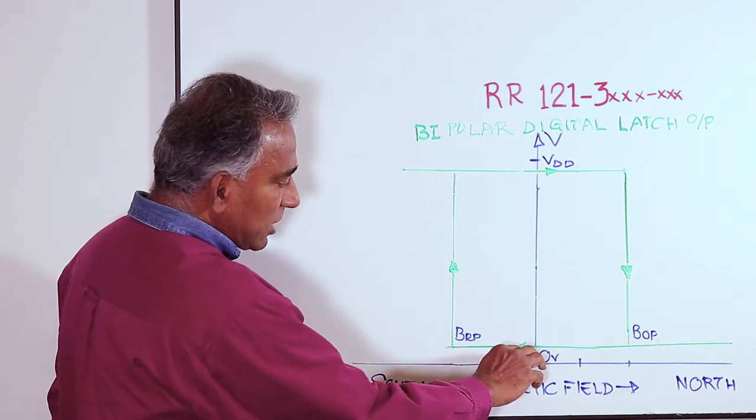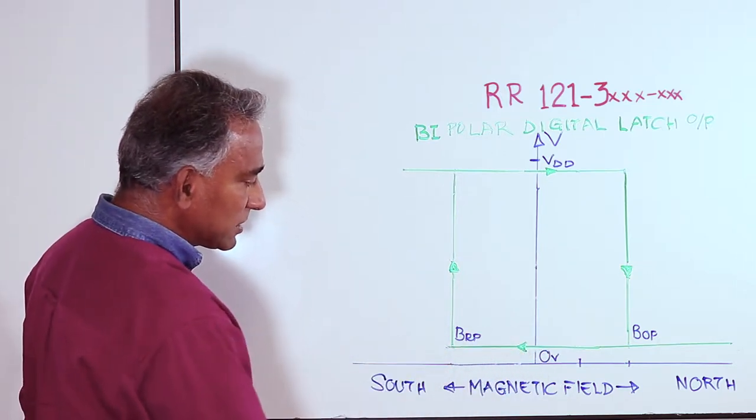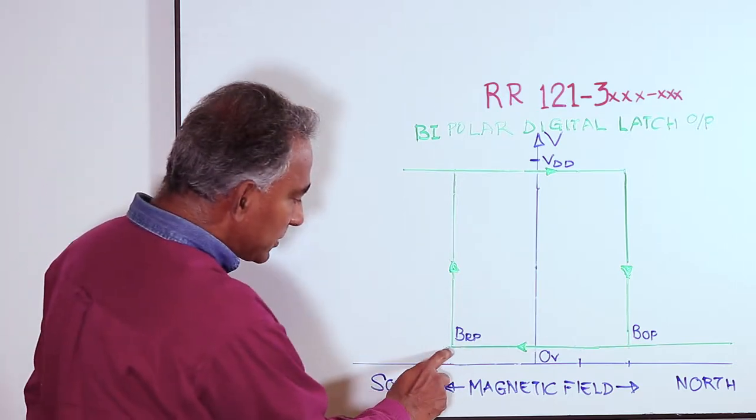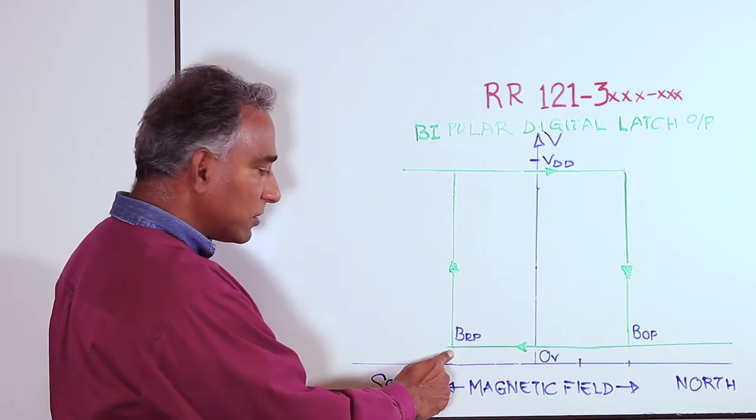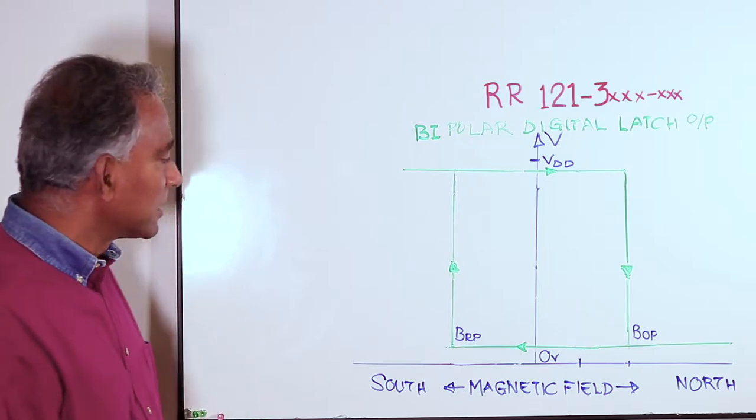Now let's assume it's a south pole approaching the sensor and the south pole field strength increases. At a point BRP or the release point, the output changes from an active state or an on state, which is digital low, to an off state, which is digital high.